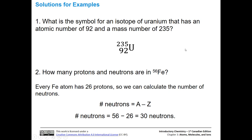For iron-56: looking at the periodic table, every iron atom has 26 protons. The number of neutrons equals the mass number minus the atomic number: 56 minus 26 equals 30. So that isotope of iron has 30 neutrons.